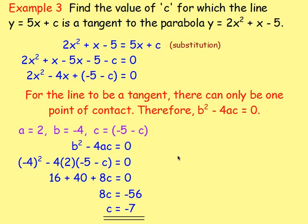Find the value of c for which the line y equals 5x + c is a tangent to the parabola y equals 2x² + x minus 5. Sub the line equation into the parabola: replace y with 5x + c, rearrange into ax² + bx + c = 0 where the constant is (-5 - c). Since it's a tangent, the discriminant equals zero. Write down a, b, and c, sub in, set equal to zero, and solve for c — giving c equals -7.